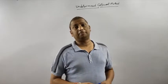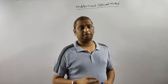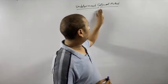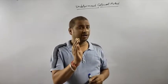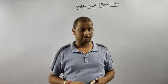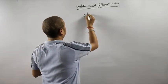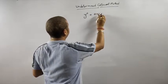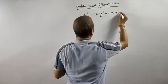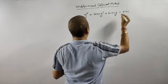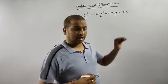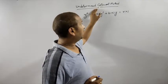Hello friends, today I am going to explain a very important method to obtain the particular integral of a second order linear differential equation. This method is known as the undetermined coefficient method. In this method, rx will play a very important role. rx means the right-hand side value — the non-homogeneous part of the given differential equation.